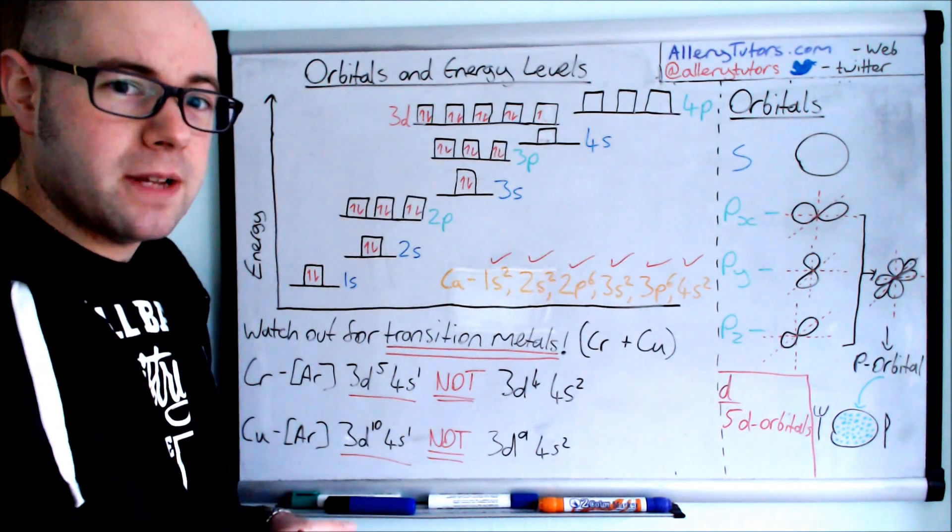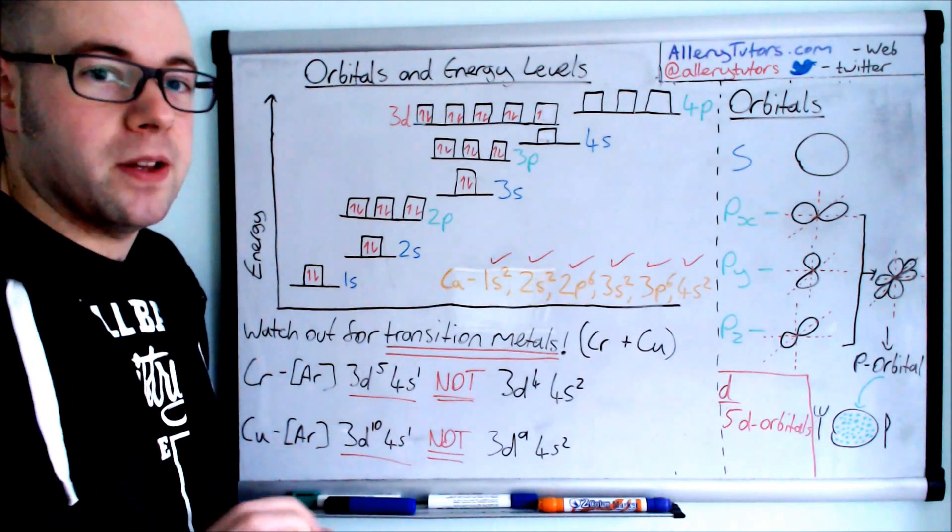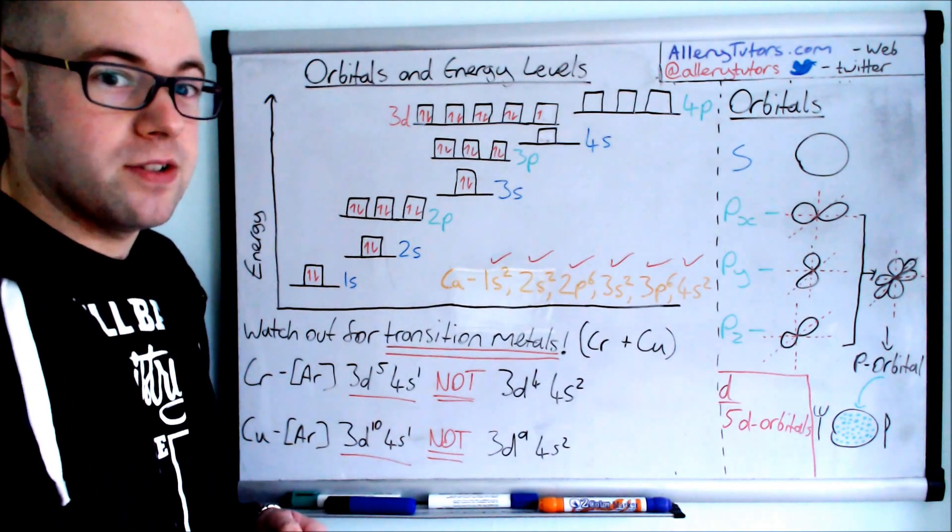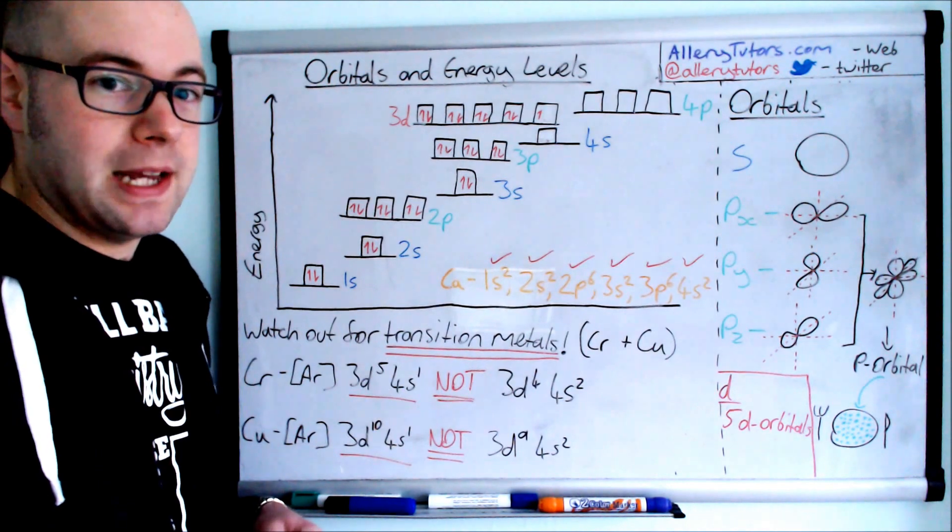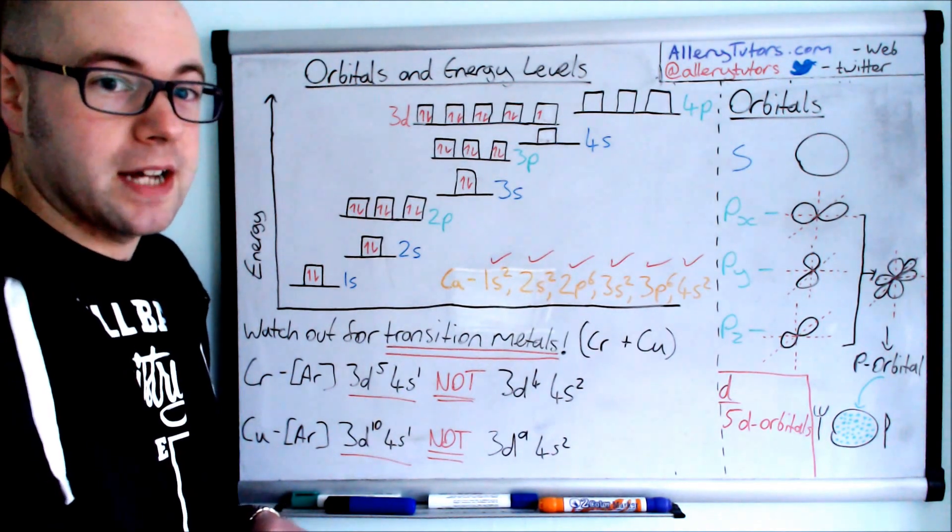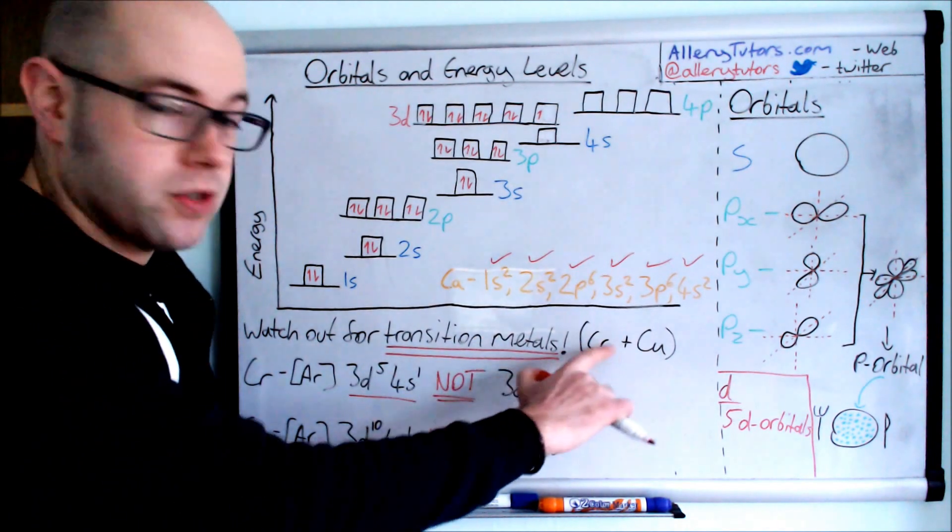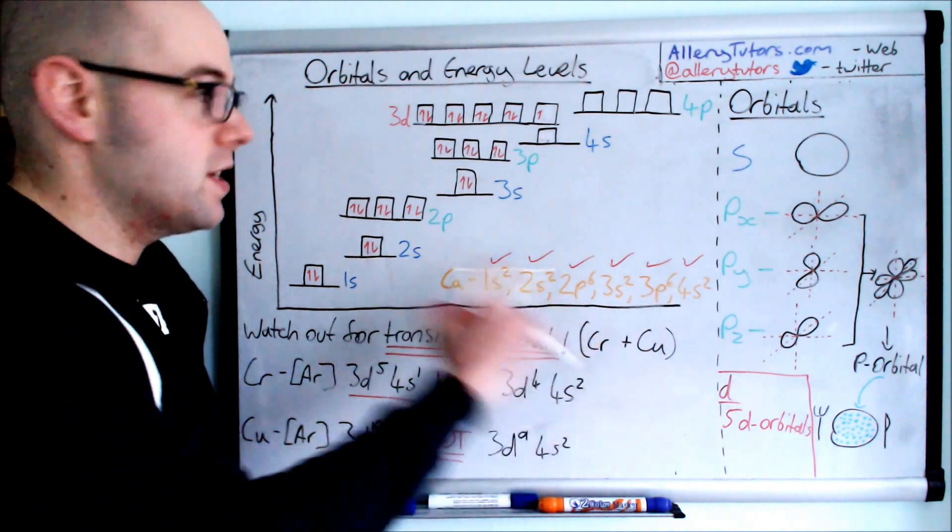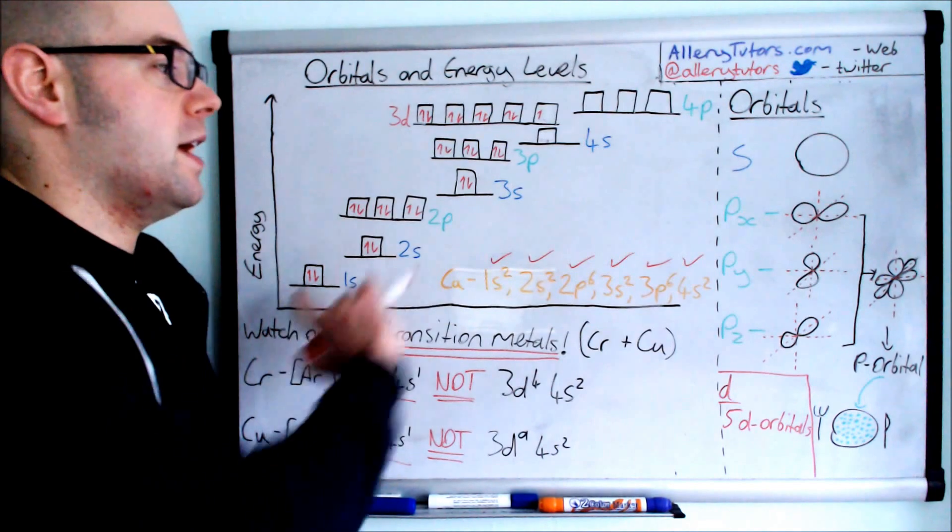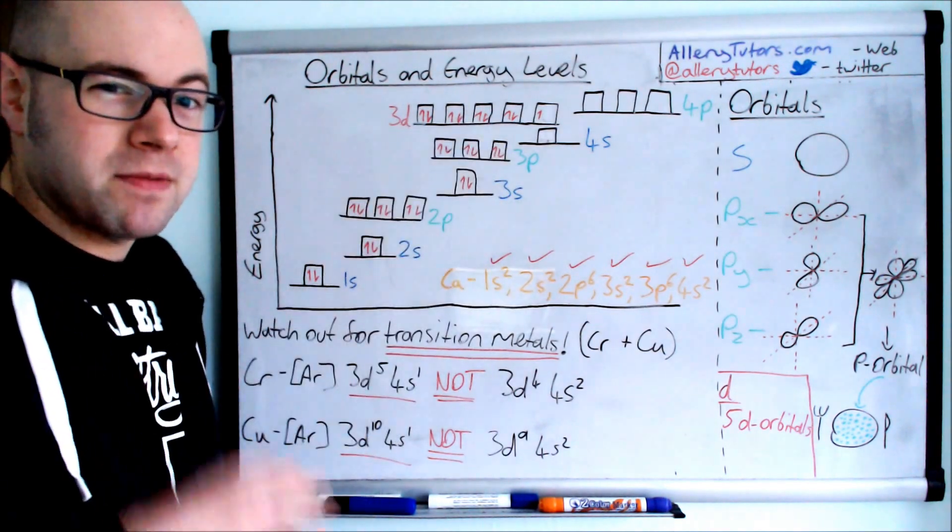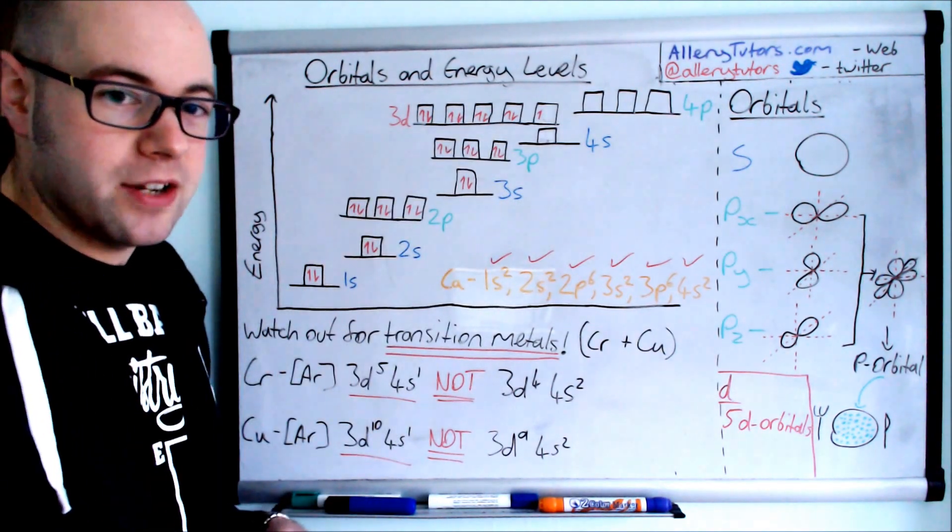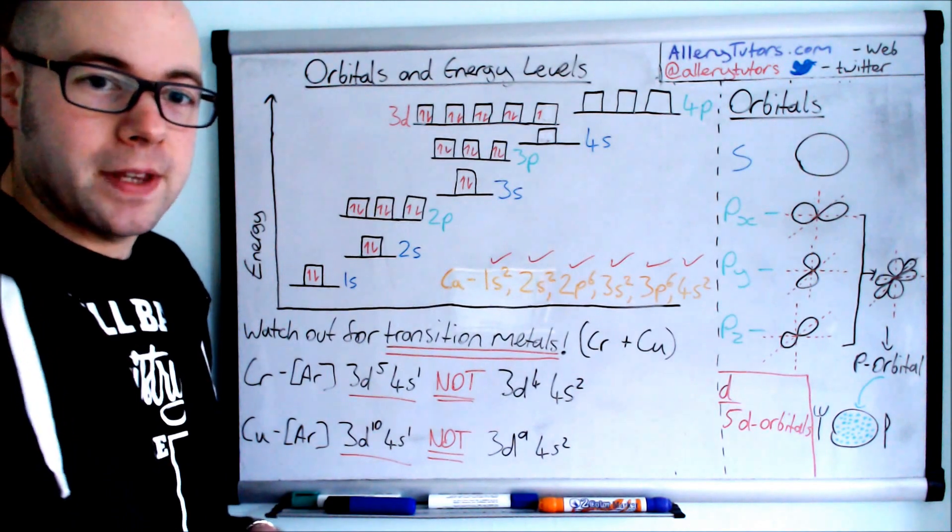There is more on that on the electron configuration video within the playlist. Make sure you have a look at that. But as long as you know these configurations for chromium and copper are slightly different, and you can order them in terms of the energy level diagrams and talk about orbitals in terms of energy, then you should be fine. That's it. Bye-bye.